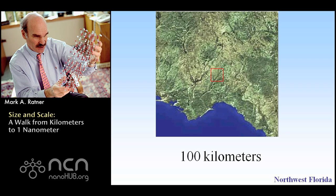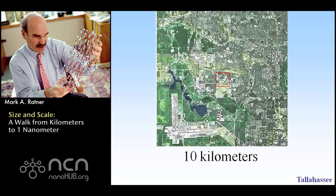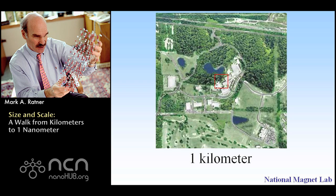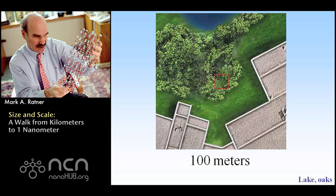We'll go down again to 10 kilometers — we're in the state capital, Tallahassee. Go down again to one kilometer; we're at the National Magnet Laboratory, which is where the most powerful magnetic fields you can get at are. Go down another factor of 10 to a hundred meters, which is about a hundred yards — lakes and oaks.